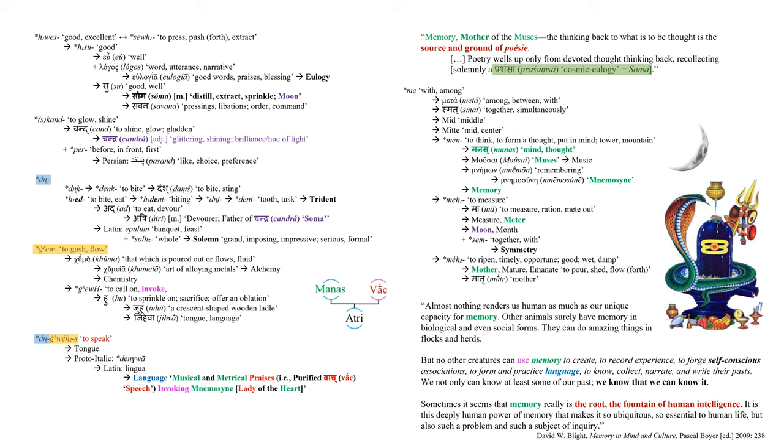We not only can know at least some of our past, but we know that we can know. Now, sometimes it seems that memory really is the root, the fountain of human intelligence. It is this deeply human power of memory that makes it so ubiquitous, so essential to human life, but also such a problem and such a subject of inquiry. Forging self-conscious associations requires the most disciplined and devoted thoughts thinking back. Rishi Atri, simultaneously the father and devourer of Soma, will be an archetype around whom the principle of devoted thought thinking back will assist in taming such imagery.